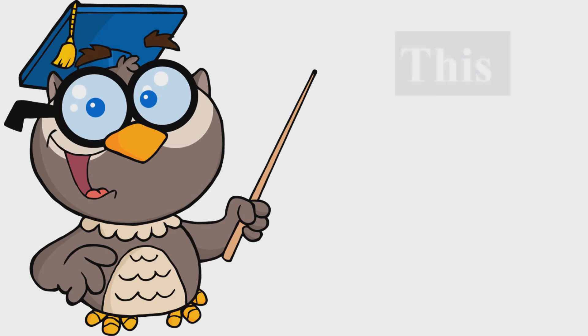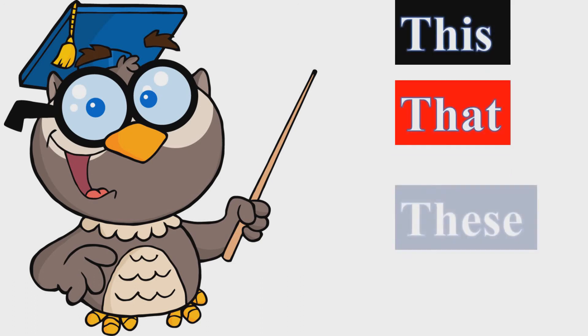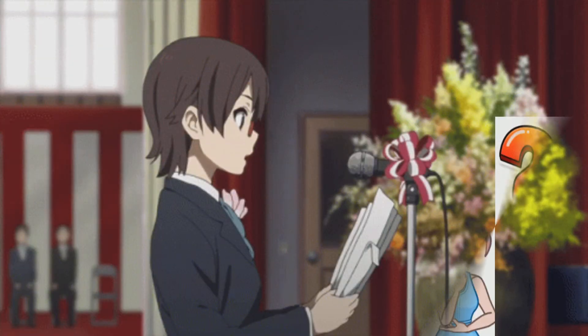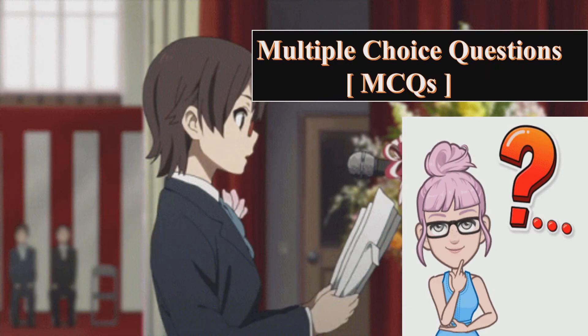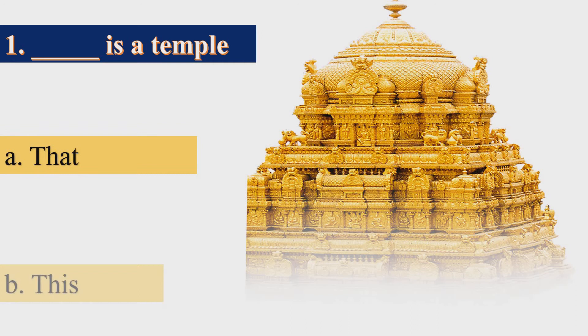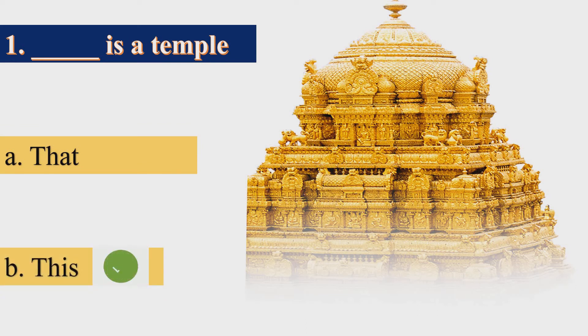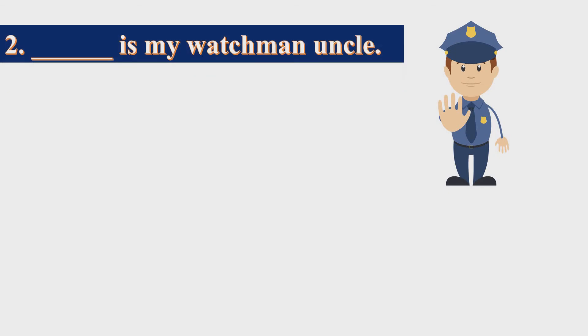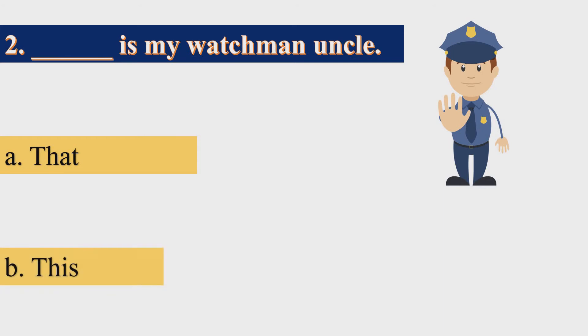Today in this module we have learnt about this, that, these and those. Now after the explanation, it's time to see what we have learnt through MCQs. Our first question: 'Dash is a temple' — 'That is a temple' or 'This is a temple'? The correct answer will be discussed. The correct answer for the next one is: 'That is my watchman uncle.'